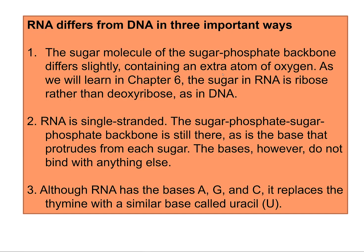To summarize: the sugar phosphate backbone differs slightly — RNA contains an extra atom of oxygen, with ribose rather than deoxyribose. RNA is single-stranded, with a sugar-phosphate backbone. The bases protrude from each sugar and only bind with their complementary base. Although RNA has A, G, and C, it replaces thymine with uracil.